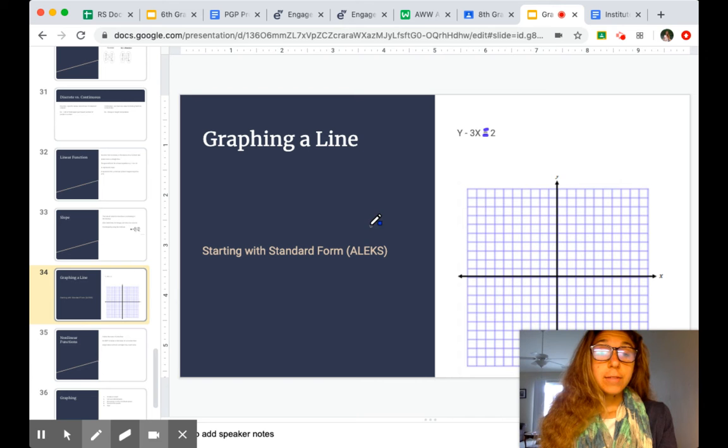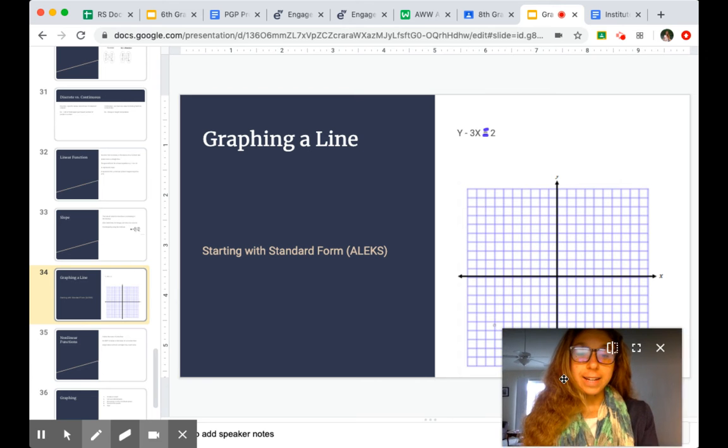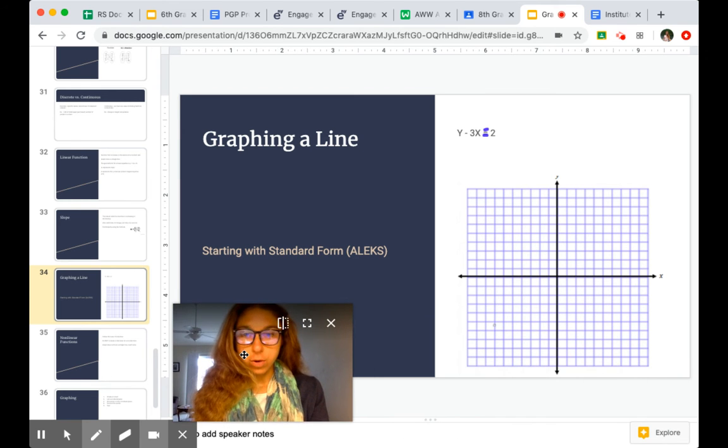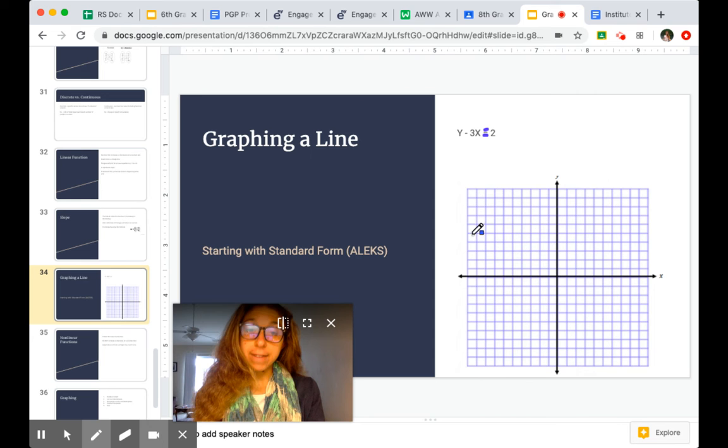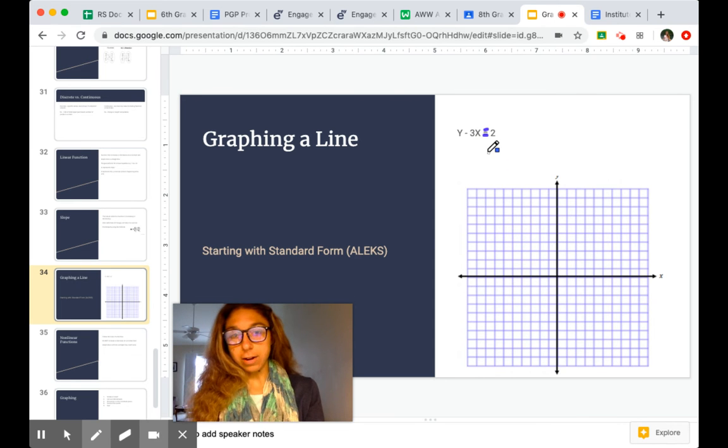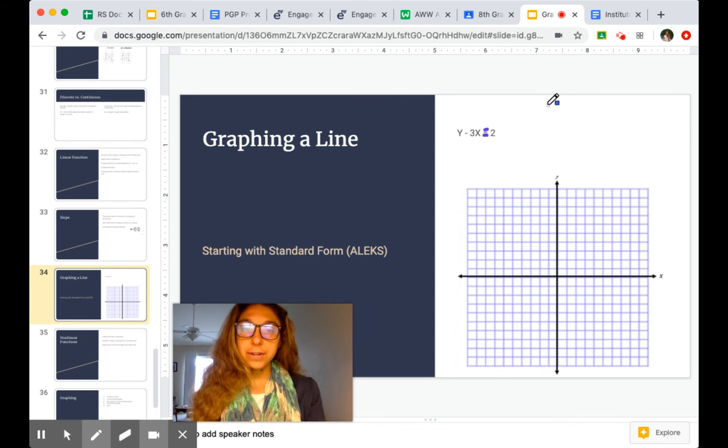So if we are starting with a line in standard form, what do we have to do to graph it? Because we know we can't really graph it if x and y are on the same side. So our first step is going to be to isolate y or get y on its own.